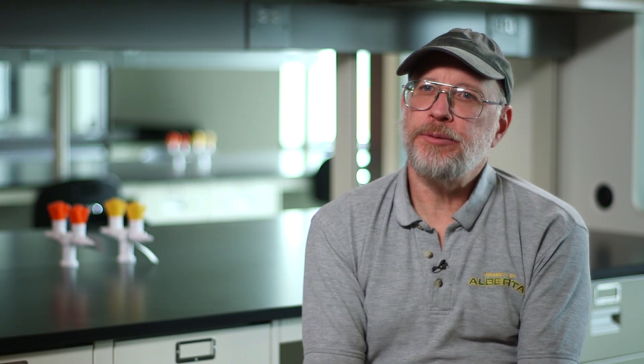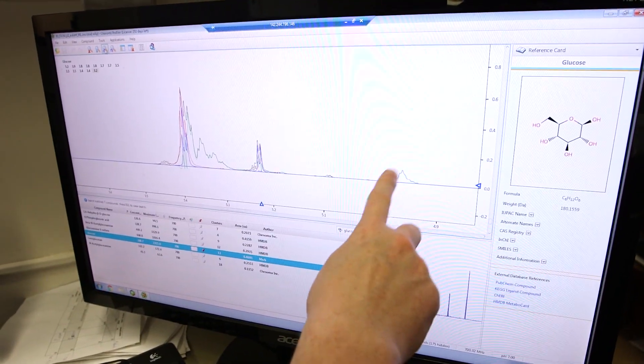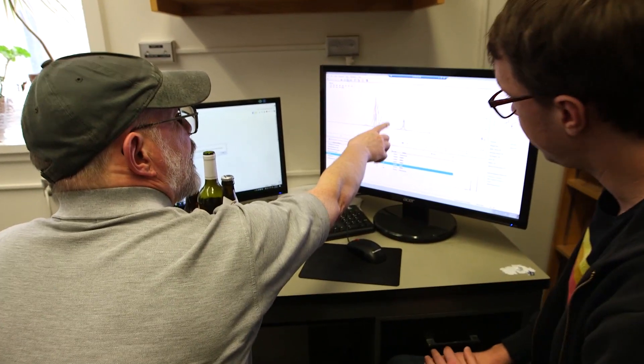Looking, for instance, at the chemical composition of wine and beer, we've developed a very rapid, automatic method for measuring about 70 to 80 compounds in beer and about 60 to 65 compounds in different wines.